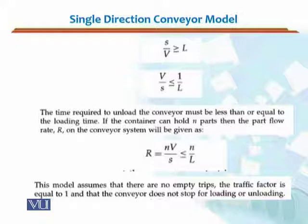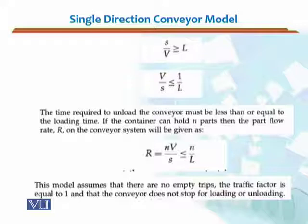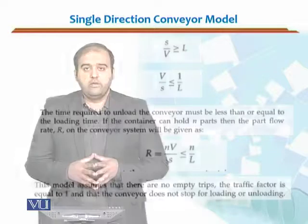This model assumes that there are no empty trips, meaning the traffic factor is equal to one, and the conveyor does not stop for loading or unloading — the conveyor will not run empty. The flow rate r = nv/s should not exceed n/l; it is bounded from above by n/l. In the single direction conveyor model, we have seen the flow rate formula and the key assumptions, making it a basic model for conveyor systems.